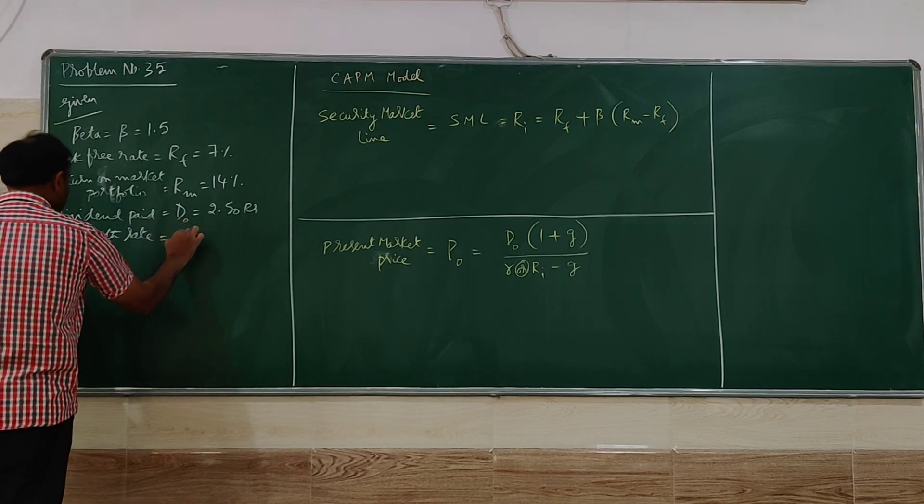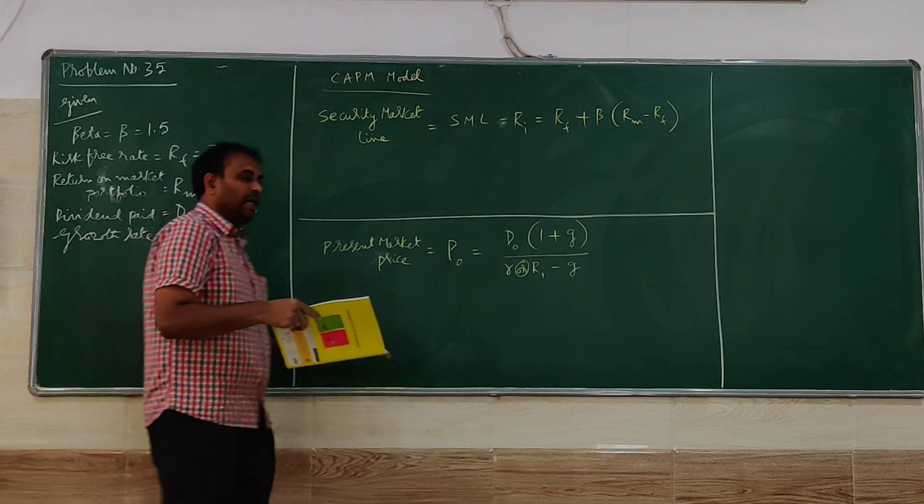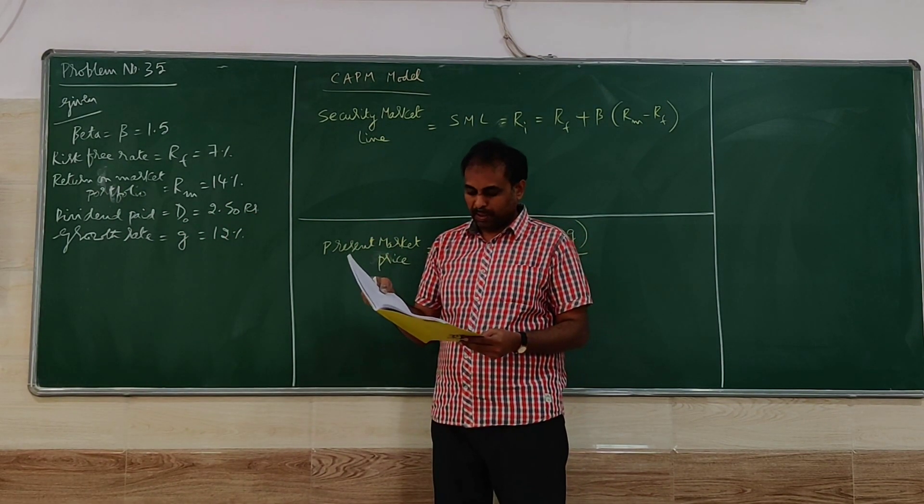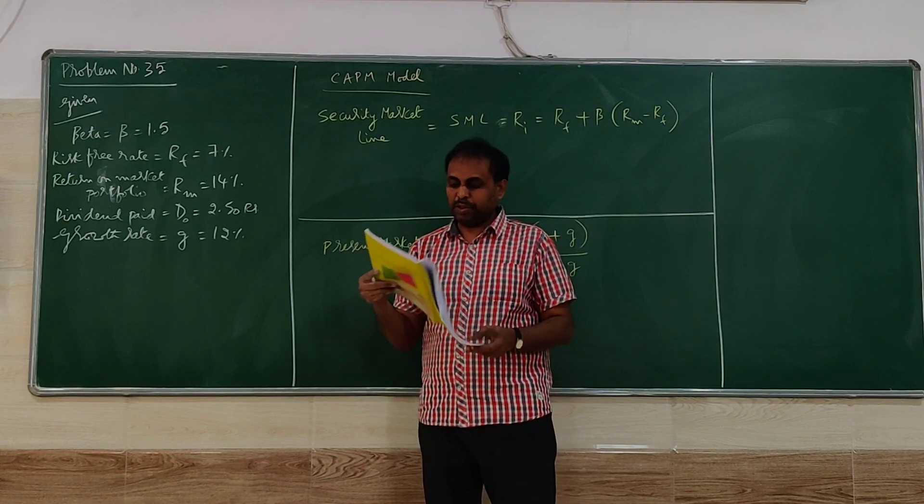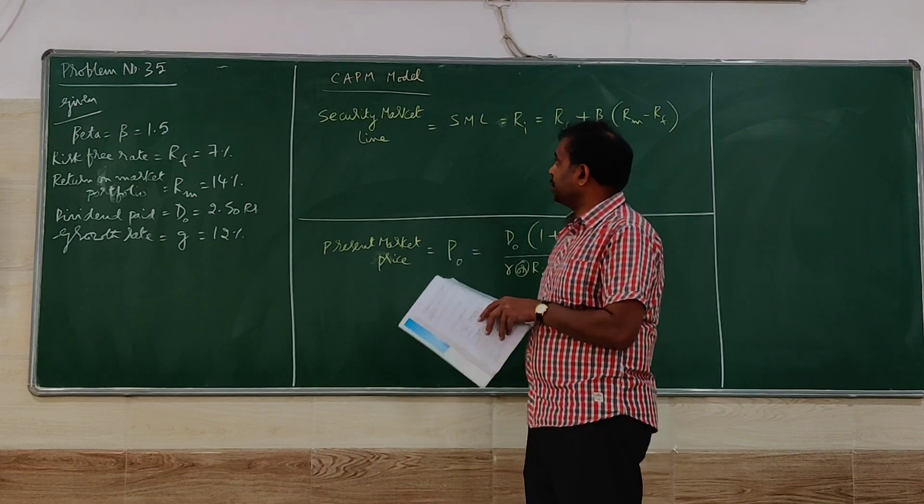This comes under dividend policy in financial management. So that is G equals 12%. So these are the information given in the problem. So we have to go for the calculation.